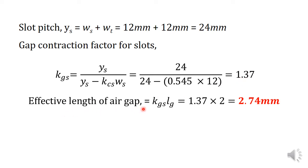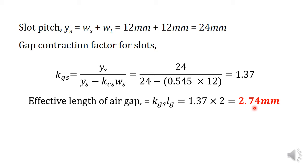The effective length of air gap is equal to the product of the gap contraction factor and the length of air gap. That is KGS into LG, which is 1.37 into 2, equal to 2.74 mm. So even though the actual length of air gap is 2 mm, due to the presence of slots, the effective length of air gap has become 2.74 mm.